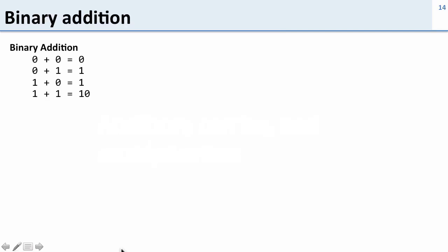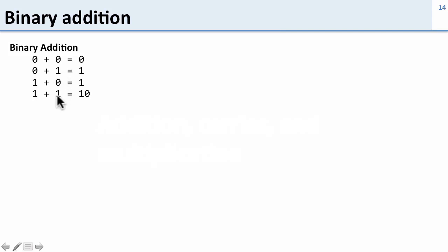So binary addition. In binary addition it's pretty simple to start out with since we only have 0s and 1s — only these four building blocks. 0 plus 0 is 0; 0 plus 1 or 1 plus 0 is 1; and 1 plus 1 is 2, which in binary is 1, 0.